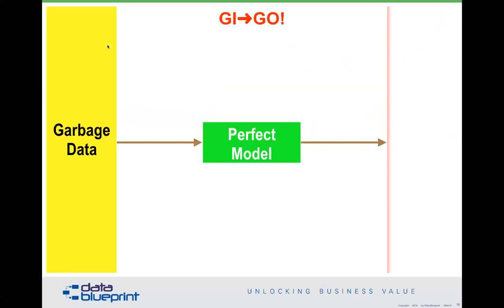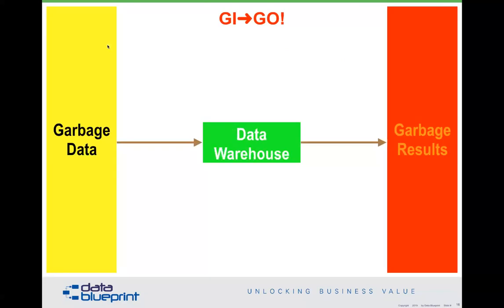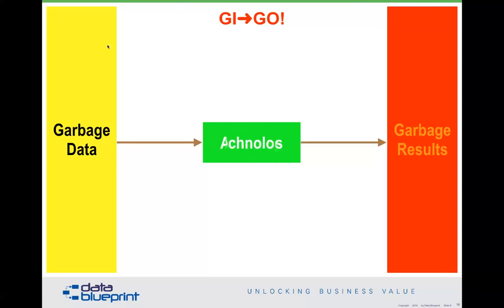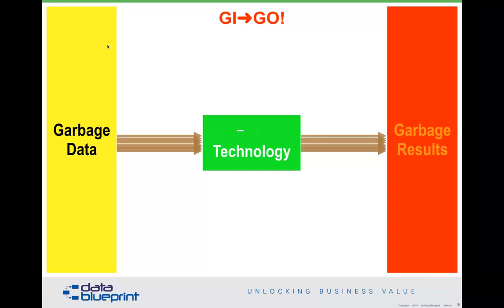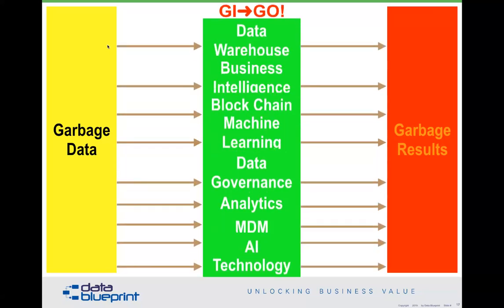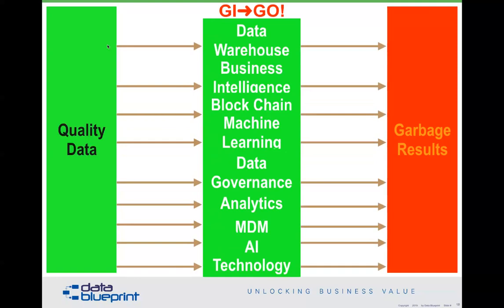Garbage in, garbage out is one of the most important concepts here. It doesn't matter what you have in the middle — a perfect model, a data warehouse, machine learning, business intelligence, blockchain, AI, MDM, governance, or analytics. It doesn't matter what you call it. If you've got garbage data, you're going to have garbage results. The only way to improve that is by improving the quality of your data.